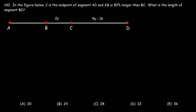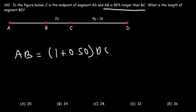Number 142. In the figure below, C is the midpoint of segment AD, and AB is 50 percent longer than BC. What is the length of segment BD? Let's start with the expression: AB is 50 percent longer than BC. If something is 50 percent longer, it's 1 plus 0.50, so AB equals 1.5 times BC.